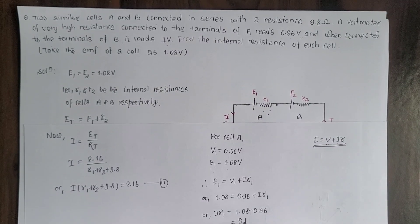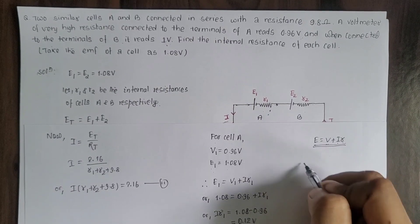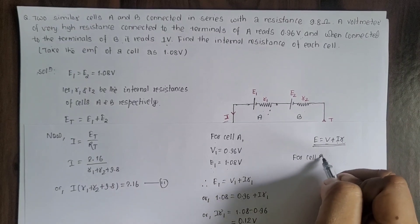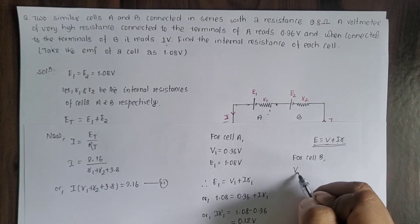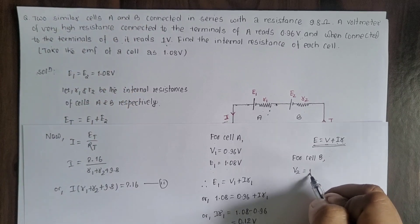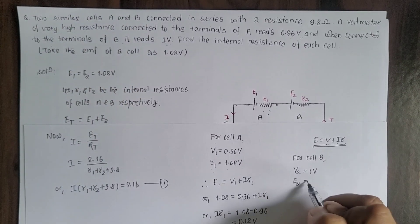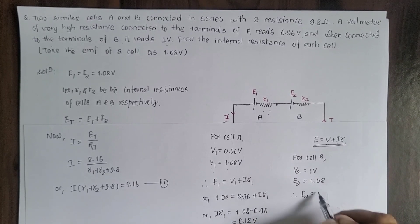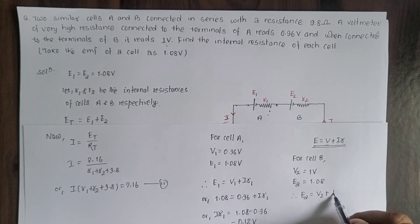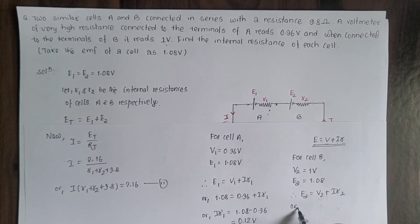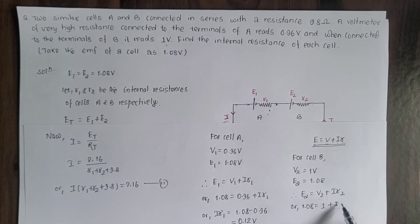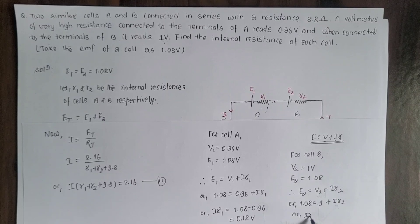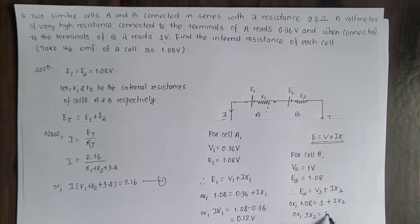Similarly for cell B: the potential difference of cell B, V2, equals 1 volt. EMF E2 also equals 1.08 volt. So E2 equals V2 plus i times R2: 1.08 equals 1 plus i times R2, therefore iR2 equals 1.08 minus 1, which equals 0.08 volt.